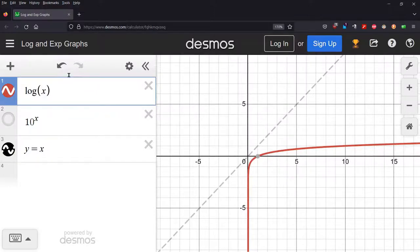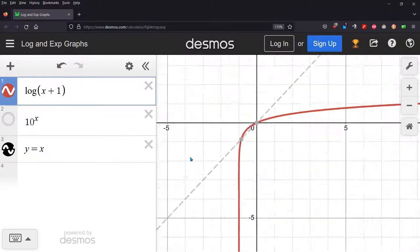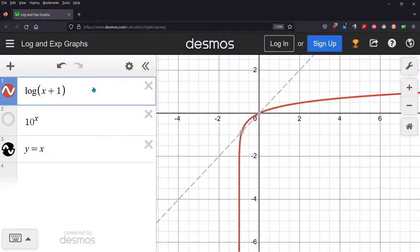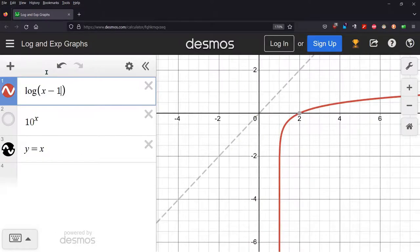And if we start to put a horizontal shift, I did a plus 1, that would move the vertical asymptote to the left 1 unit. If it was a minus 1, it would move it to the right 1 unit.